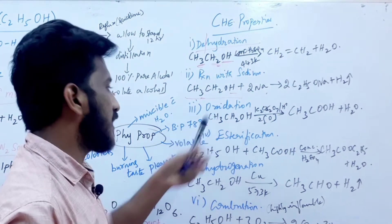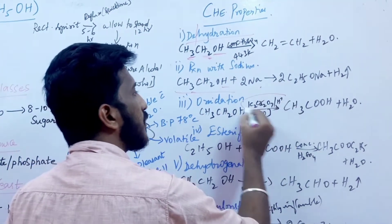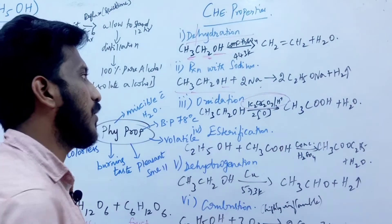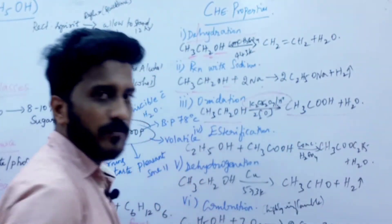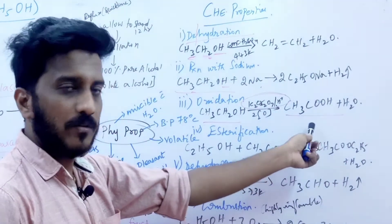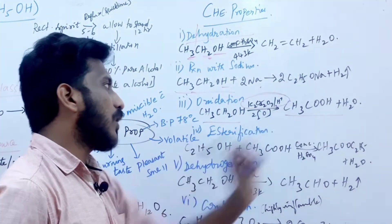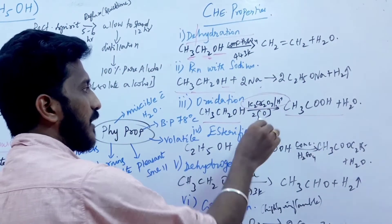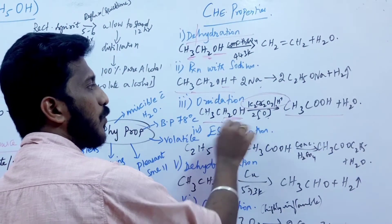Next is oxidation. Using an oxidizing agent like potassium dichromate, ethanol is oxidized to give Ethanoic Acid plus water molecule is liberated.